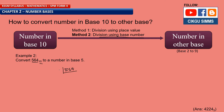We divide by 5. Take 564 divided by 5. You can use mental calculation: 5 times 112 is 560, so the answer is 112 with remainder 4. Write the remainder at the side. Note that in method 1 the answer is written at the top, but in method 2 the answer is written at the bottom. Continue: 112 divided by 5 — 5 times 22 is 110, so answer is 22 with remainder 2. Write remainder 2 at the side.